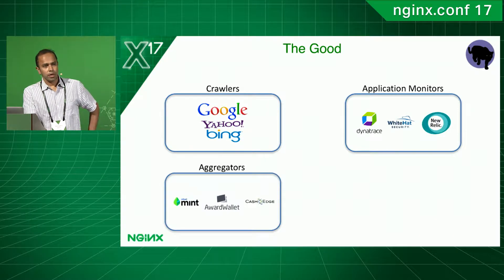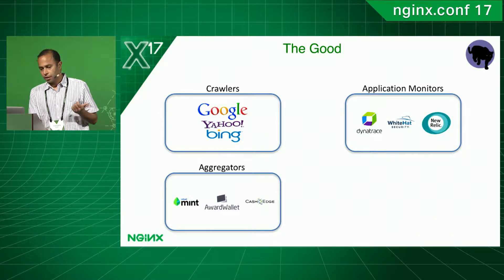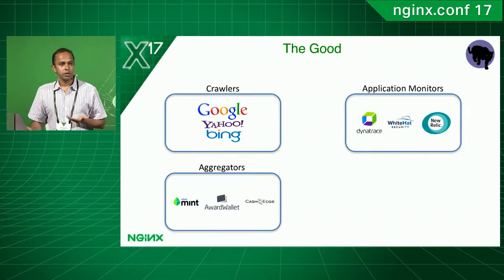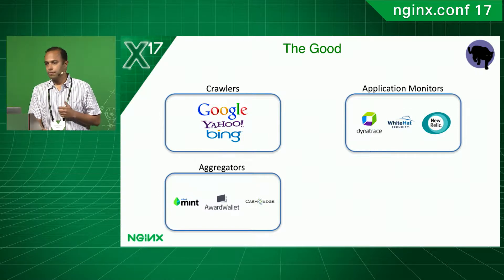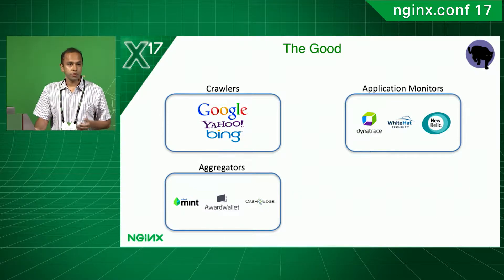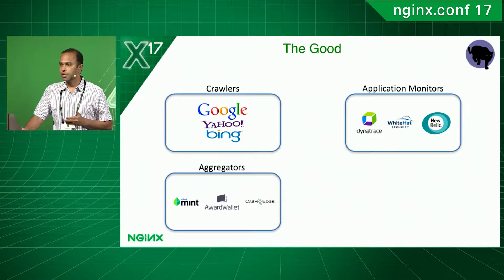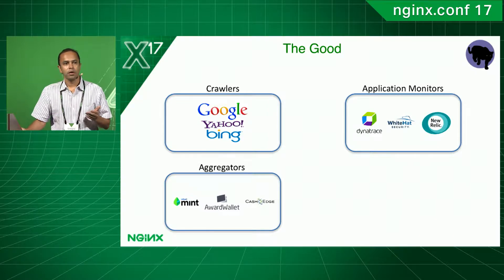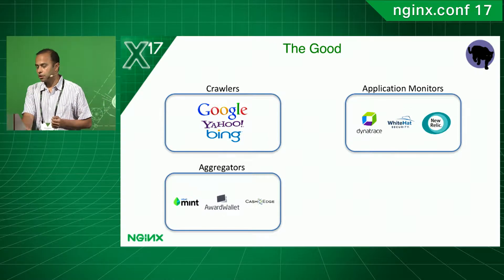The third kind are aggregators, and it's very vertical-market specific. In the financial segment, there are Mint and Yodlee of the world that are scraping information on your customer's behalf. You don't want to block them, but you do want visibility on them.